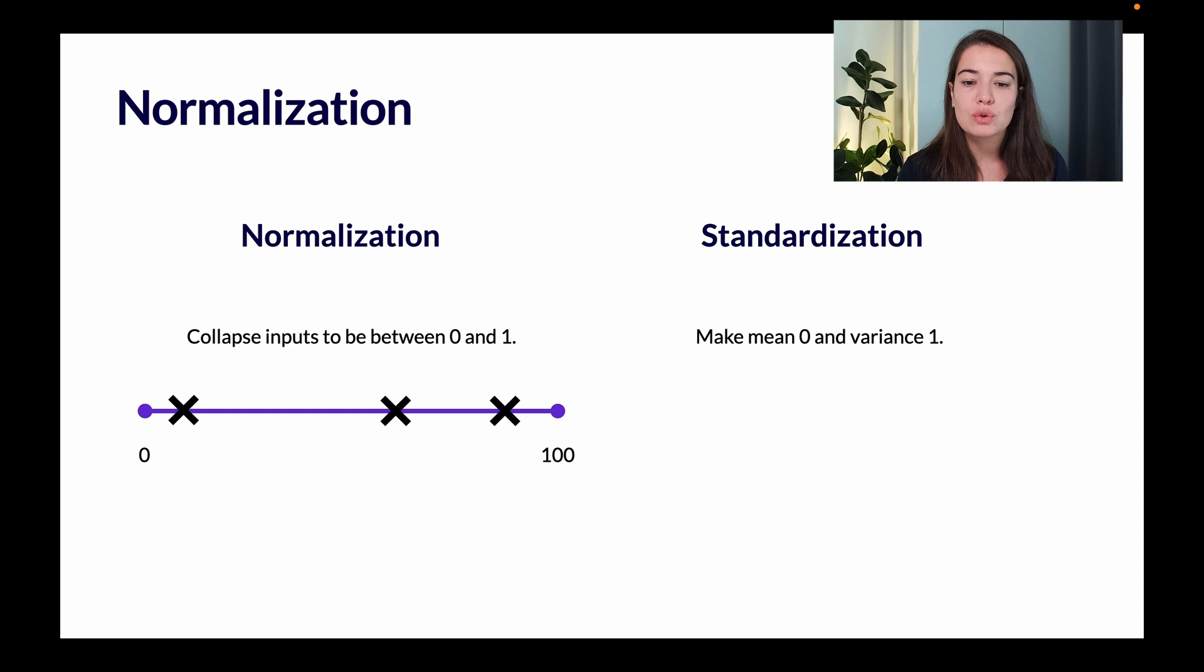On a little visual, what it would look like is if we had some values that go from zero to 100—let's say they were 20, 70, and 90. After we normalize them, they're going to be between zero and one. So then they'll probably be 0.2, 0.7, and 0.9, still keeping the ratio that they had to each other.